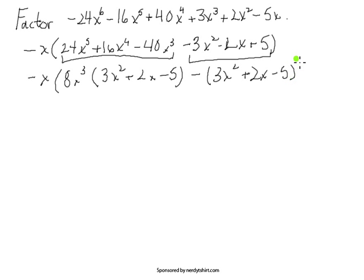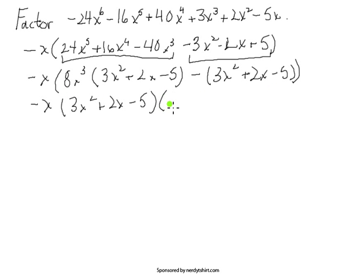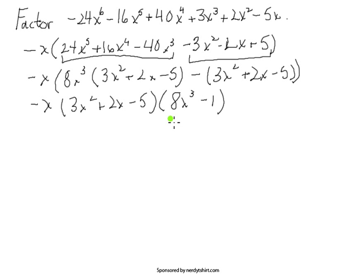This is a successful grouping — you've got exactly the same leftover trinomial in both groups, so you can factor it out as common. To complete the grouping: the minus x from the beginning carries through, the trinomial 3x squared plus 2x minus 5 comes out as common, leaving behind 8x cubed from the first term and minus 1 from the second. The question arises again: are you done? Probably not — the trinomial is potentially factorable, and the binomial 8x cubed minus 1 fits the difference of cubes setup.